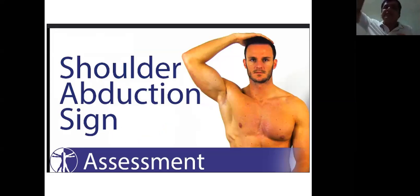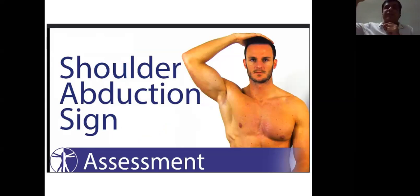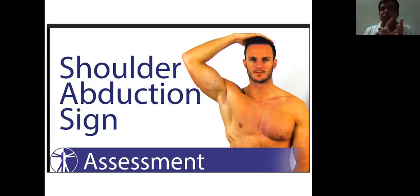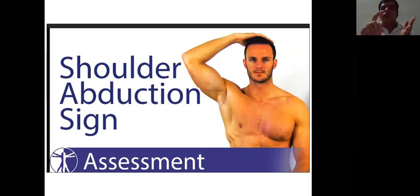In the Davidson sign, the patient abducts the arm and keeps the hand over the neck. When the arm hangs down, the stretch over the brachial plexus and nerve root increases. When they abduct, the stretch decreases, thereby reducing the pain. To summarize: Spurling sign and axial compression increase nerve root tension; cervical distraction and shoulder abduction (Davidson sign) relieve nerve root tension.